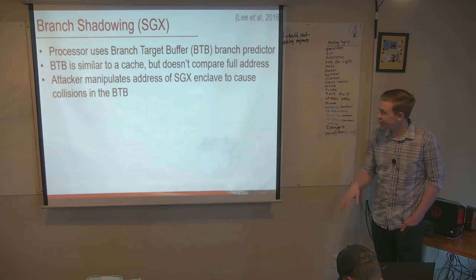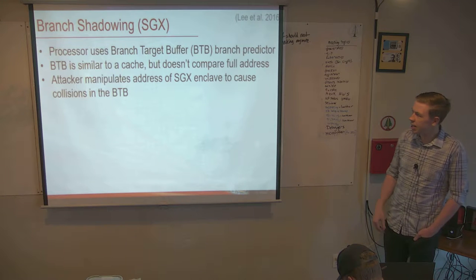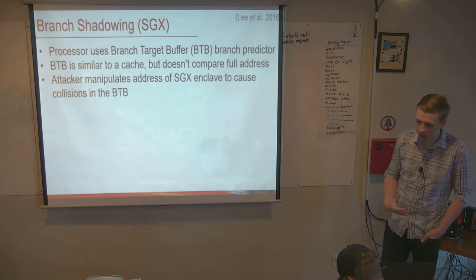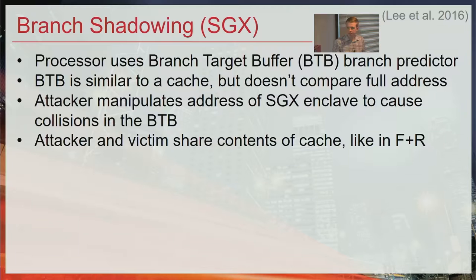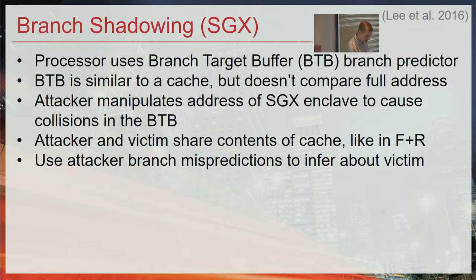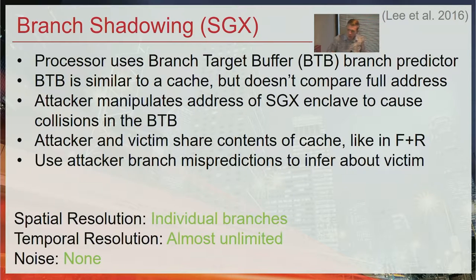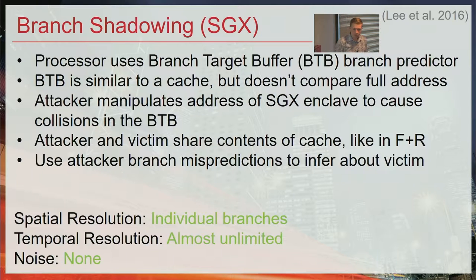The branch shadow attack, which came out before Spectre, uses this partial comparison to create collisions within the branch target buffer. Similar to a flush and reload attack, the attacker and victim share the same BTB contents due to overlapping addresses. We can do essentially a flush and reload attack using this branch target buffer. On the metrics: spatial resolution is fantastic — we can see individual branches. Temporal resolution is also great because we can use the same interrupt technique for almost unlimited temporal resolution. And noise is very low due to very reliable measurements using this branch targeting behavior.